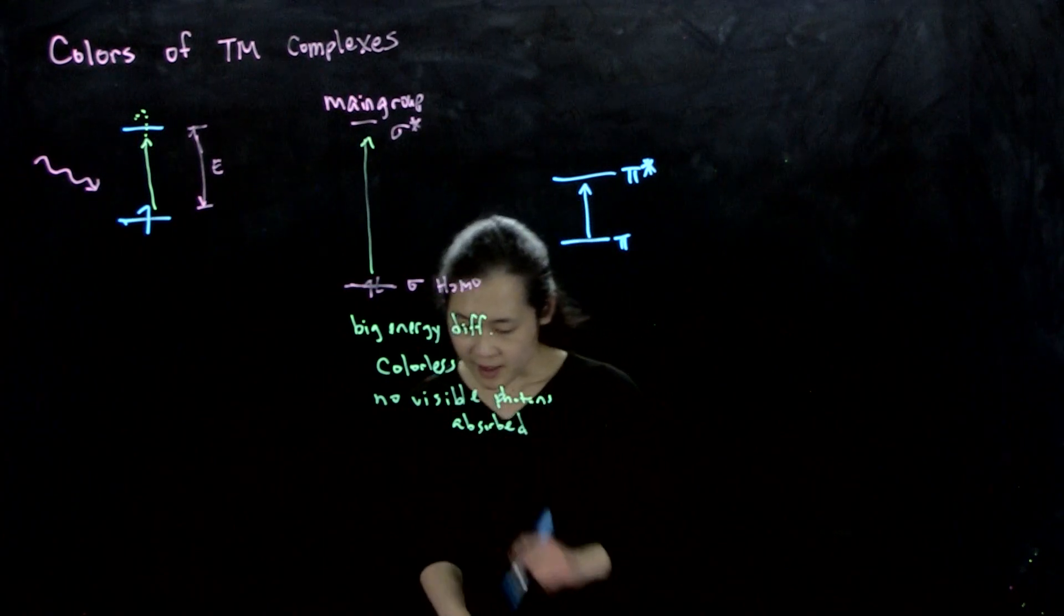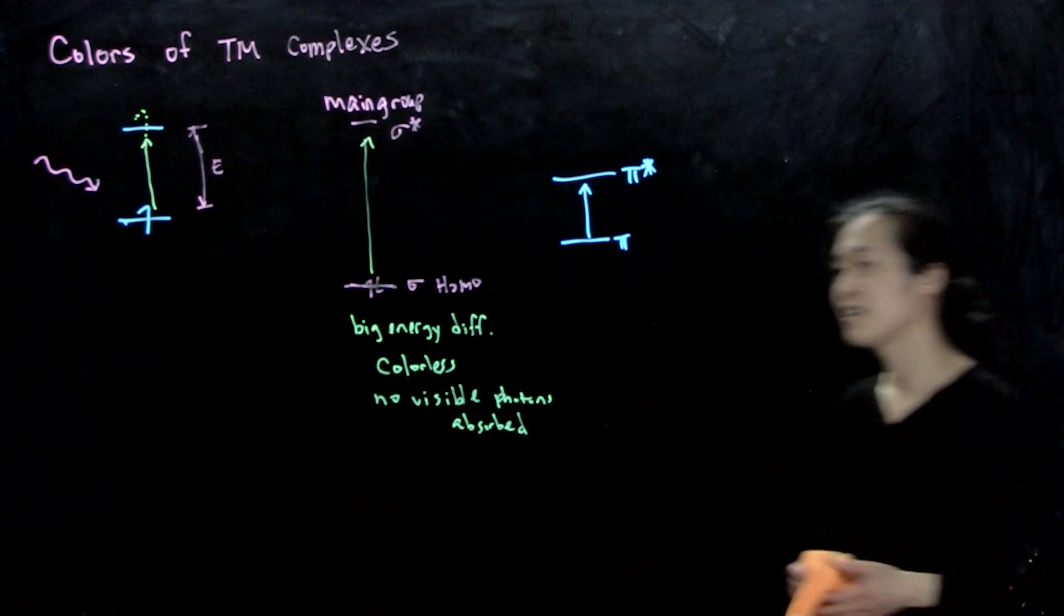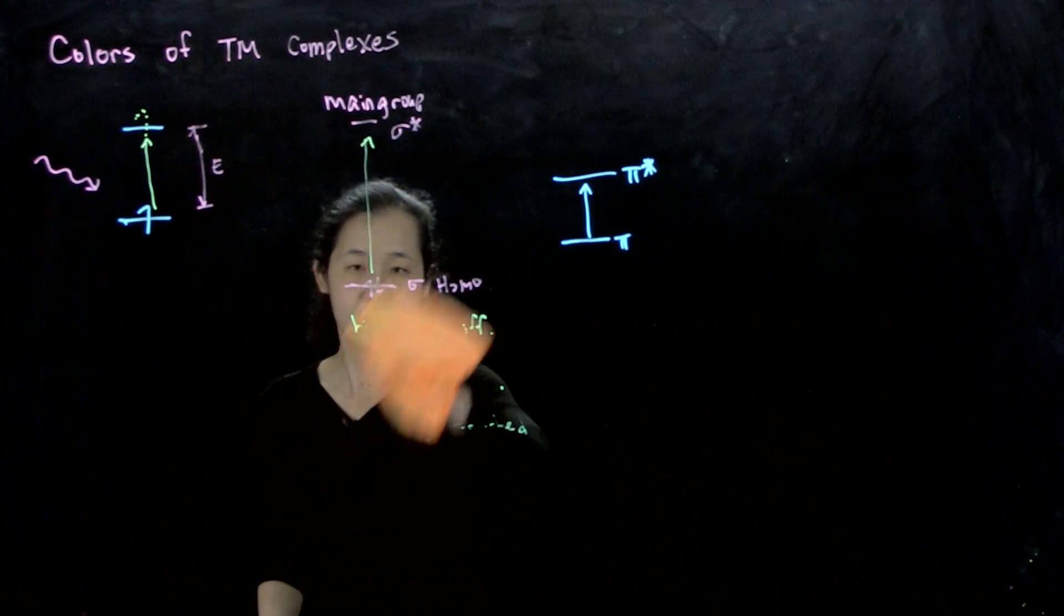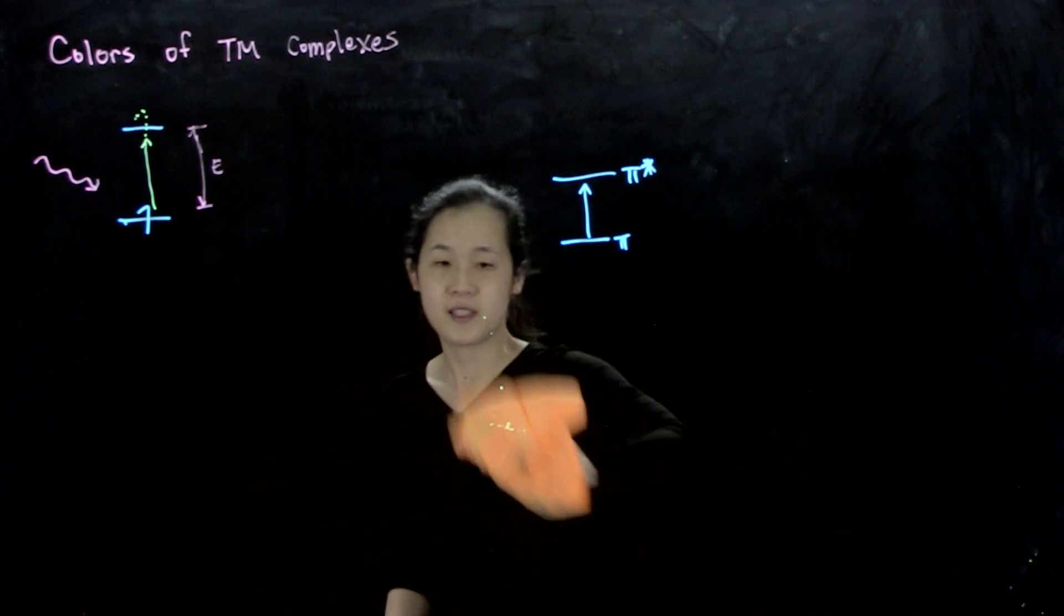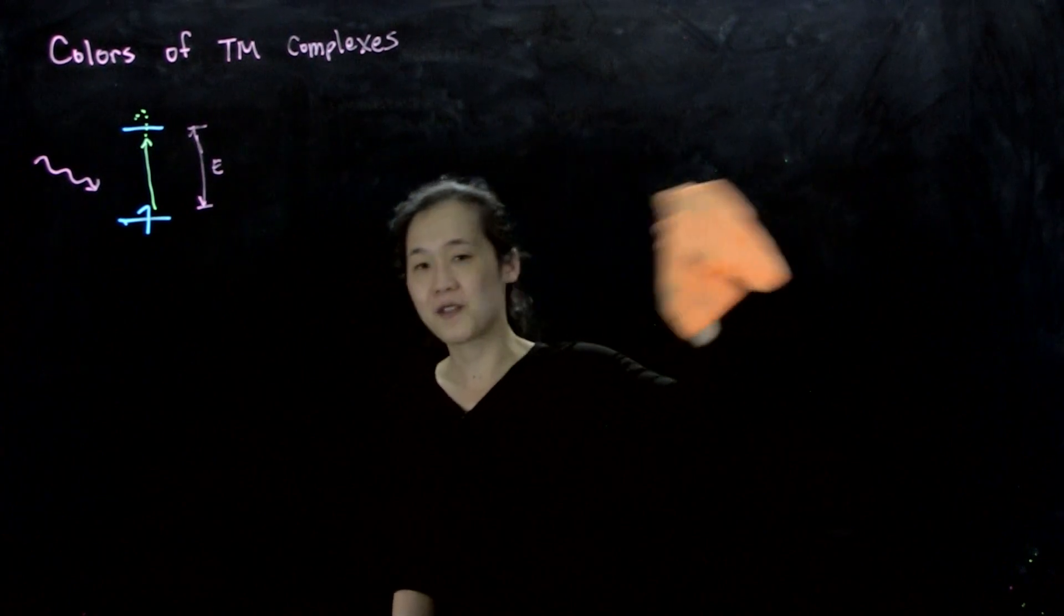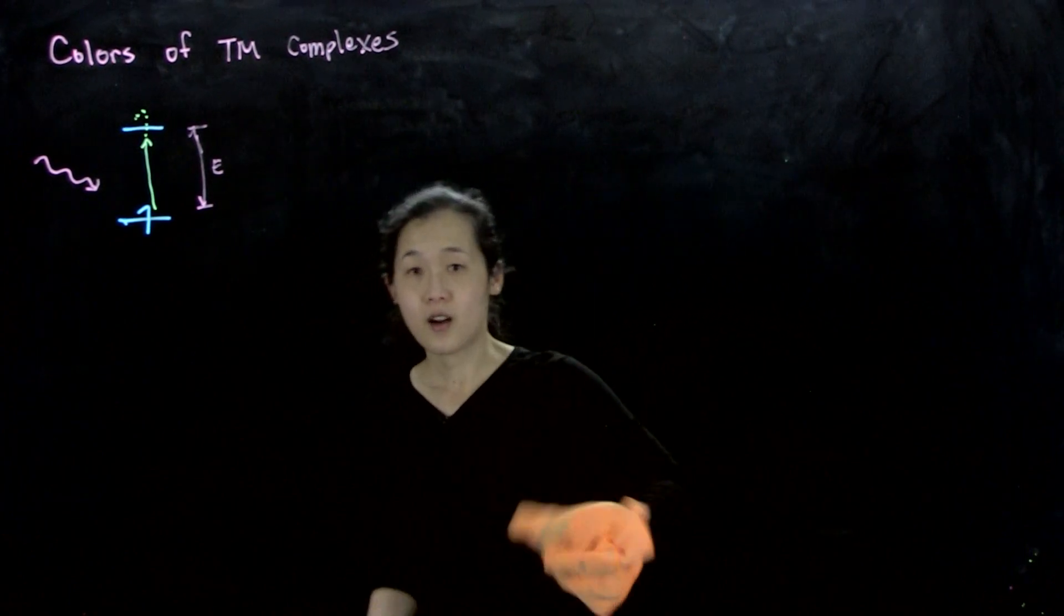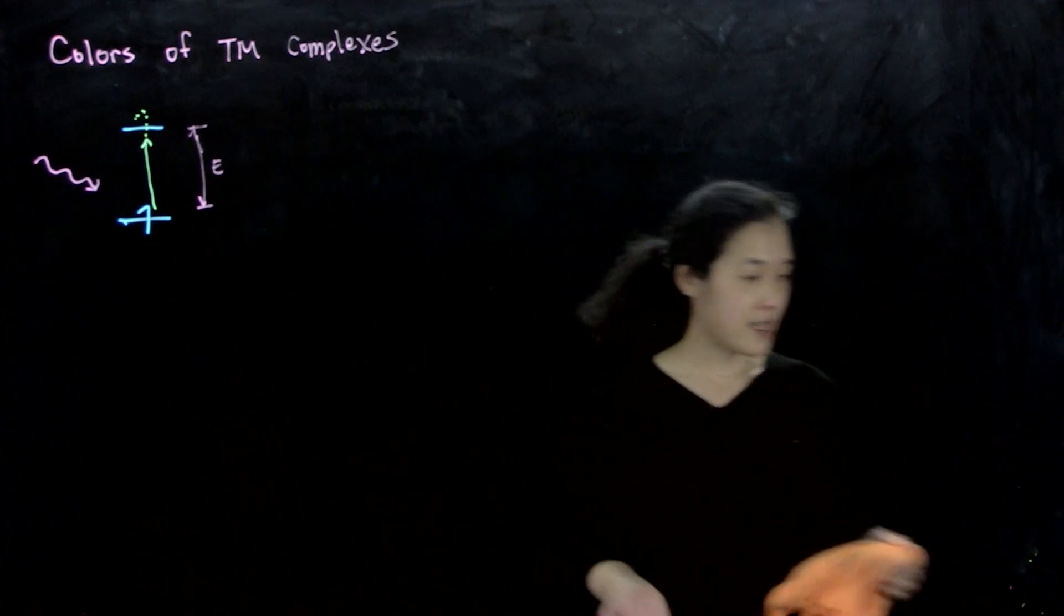So let's talk about transition metal complexes. For transition metal complexes, if you have a kind of middling d count, if you're d1 through d9, then our HOMO and our LUMO are going to be in that d orbital splitting diagram that we talked about.